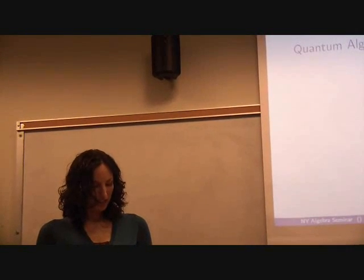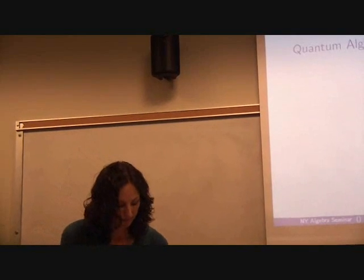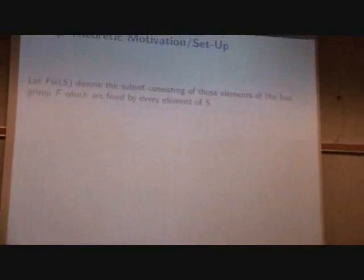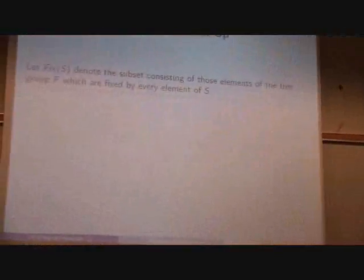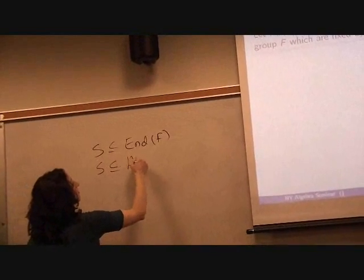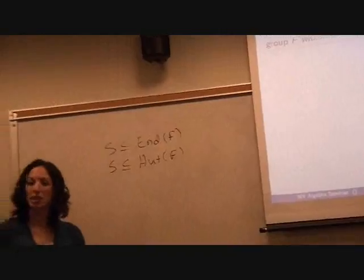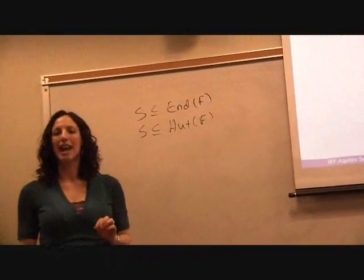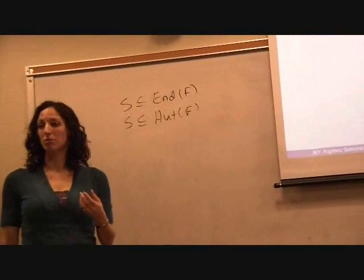We're going to begin with our group theoretic motivation. Let fix S denote the subset that consists of the elements of a group which are fixed by every element of the set S. S can consist of endomorphisms or it can consist of automorphisms. We call this fix S the fixed subgroup of S. Now remember fix S consists of points of the group, elements of the group.